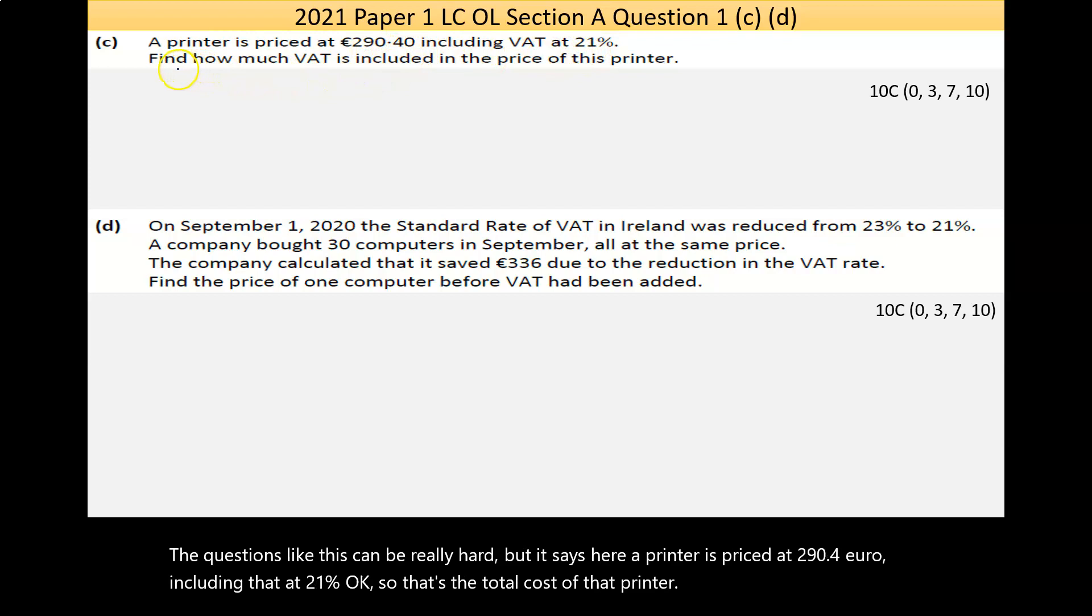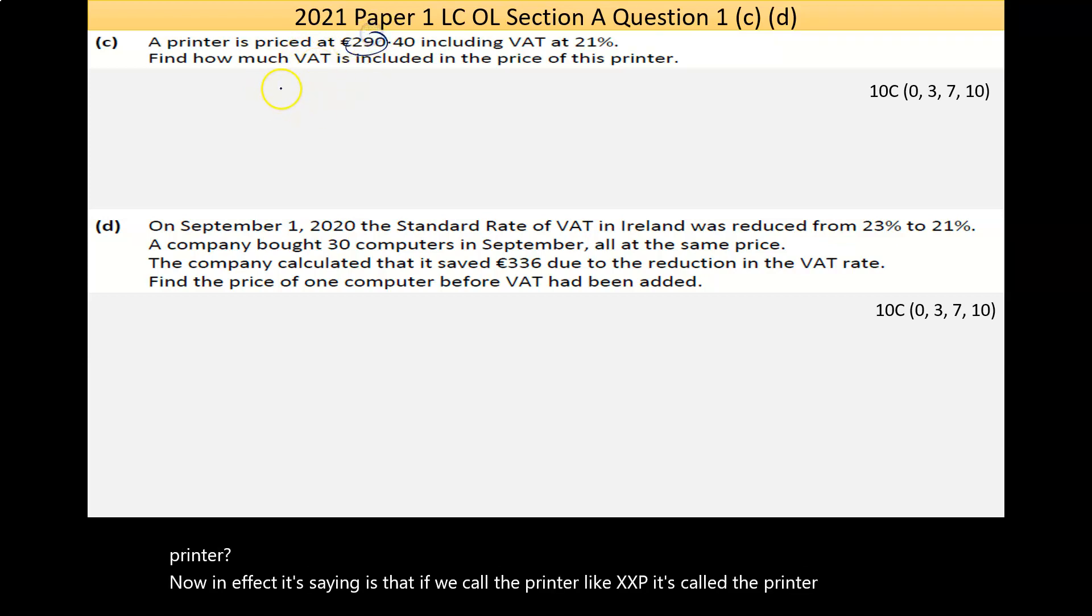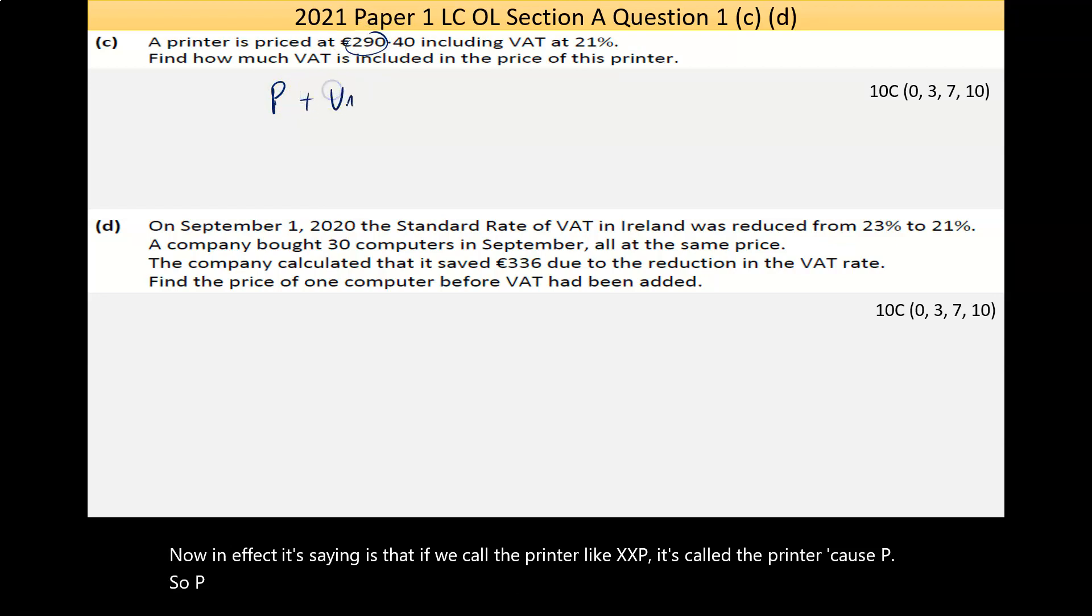The question is specifically asking us to find how much VAT is included in the price of this printer. In effect, what it's saying is that if we call the printer cost P, so P plus VAT equals 290.4.